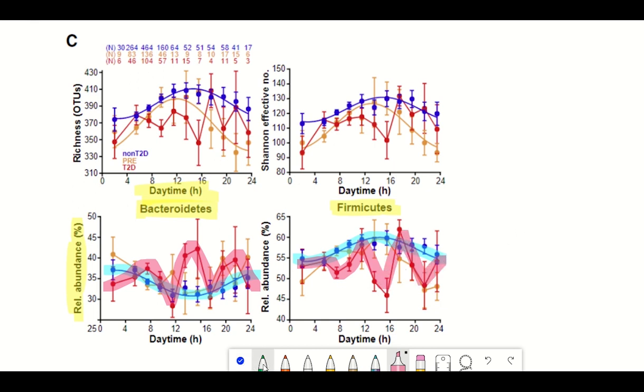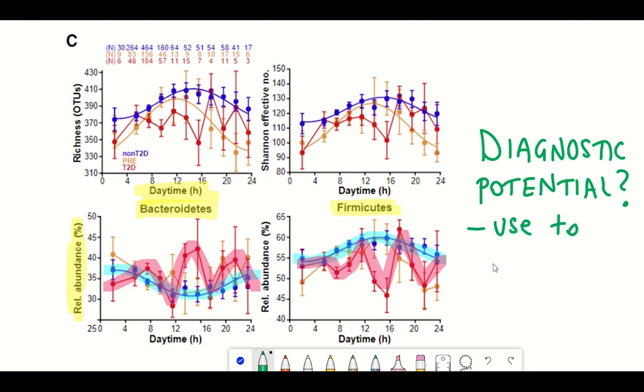There doesn't really seem to be a clear pattern or these diurnal fluctuations that are expected. Effectively, what the study shows is that if you can assess the fluctuation in the microbiome composition of a patient, it could potentially be used as a diagnostic tool of a risk factor of that patient developing type 2 diabetes because they also had a cohort that they referred to as pre-diabetic. You can see it kind of falls in between the red and the blue graphs.